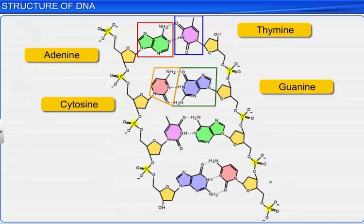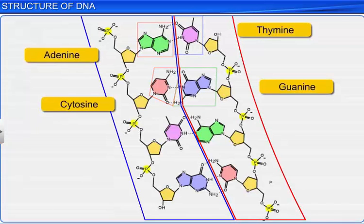In fact, due to base pairing, the polynucleotide chains possess a very unique property: the strands of the base pairs are complementary to each other.